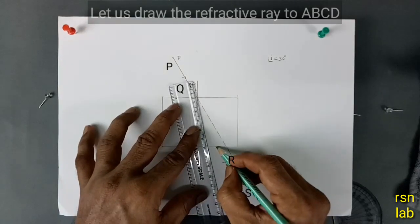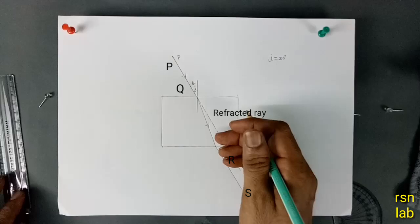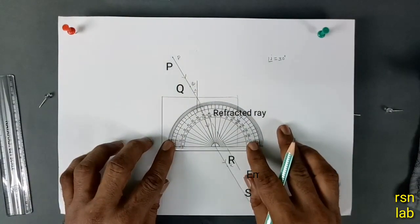Let us draw the refractive ray to ABCD. And I am doing it children, you can see it clearly.